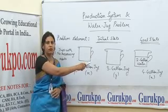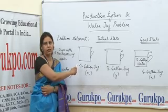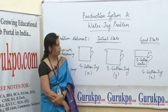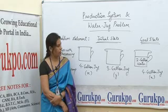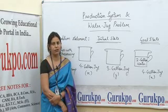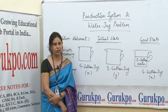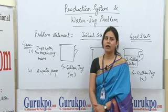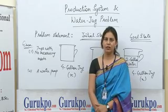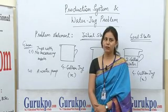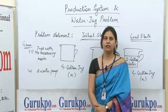In the goal state, we need to fill the X jug, that is the 4-gallon jug, with 2 gallons of water. We will be applying a set of production rules on this problem, on these two jugs. Taking the water jug problem as an example of a production system, we can solve it by applying the rules in a very controlled and systemized manner.